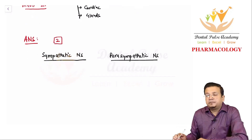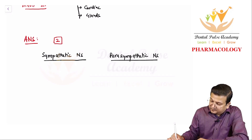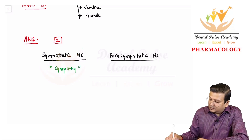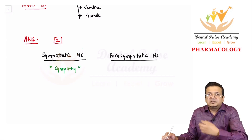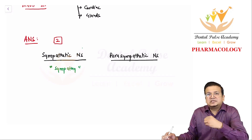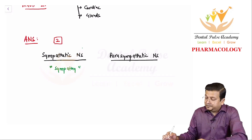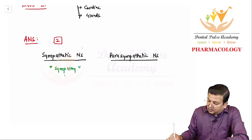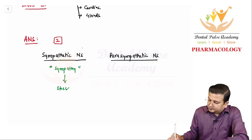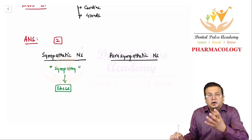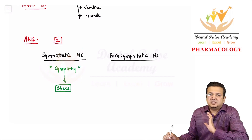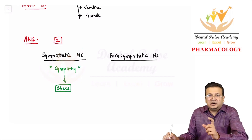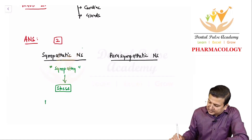The word 'sympathetic' comes from the word 'sympathy.' We expect others to be sympathetic to us when we are under stress. Similarly, whenever our body is in any kind of stress, a part of the autonomic nervous system becomes active — that part is called the sympathetic nervous system. That is why it is also called the system of fear, fight, and flight.